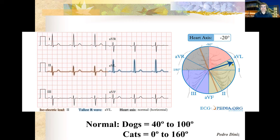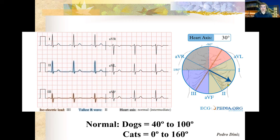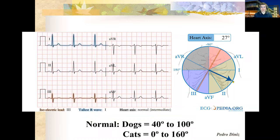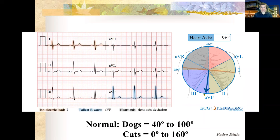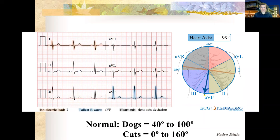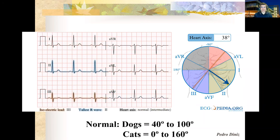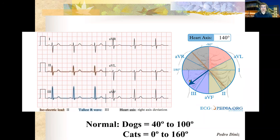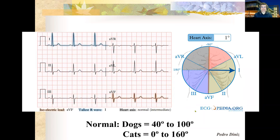This is another way to guesstimate the axis. Keep in mind: the normal range for dogs is 40 to 100 degrees, so Lead II and AVF will be the biggest waves. For cats, the range is Lead I all the way to 180 degrees, so as long as AVF is positive, the cat is normal.